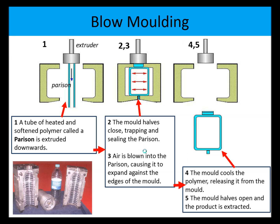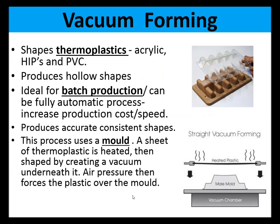Here are the steps of blow molding — again, this is something you might have to draw in the exam. A tube of heated and softened plastic polymer called a parison is extruded downwards. The mold halves close, trapping and sealing the parison. Air is blown in causing it to expand against the edges of the mold. The mold cools the polymer, releasing it from the mold. The mold halves open and the product is extracted. There we can see a mold for a bottle — that is blow molding.